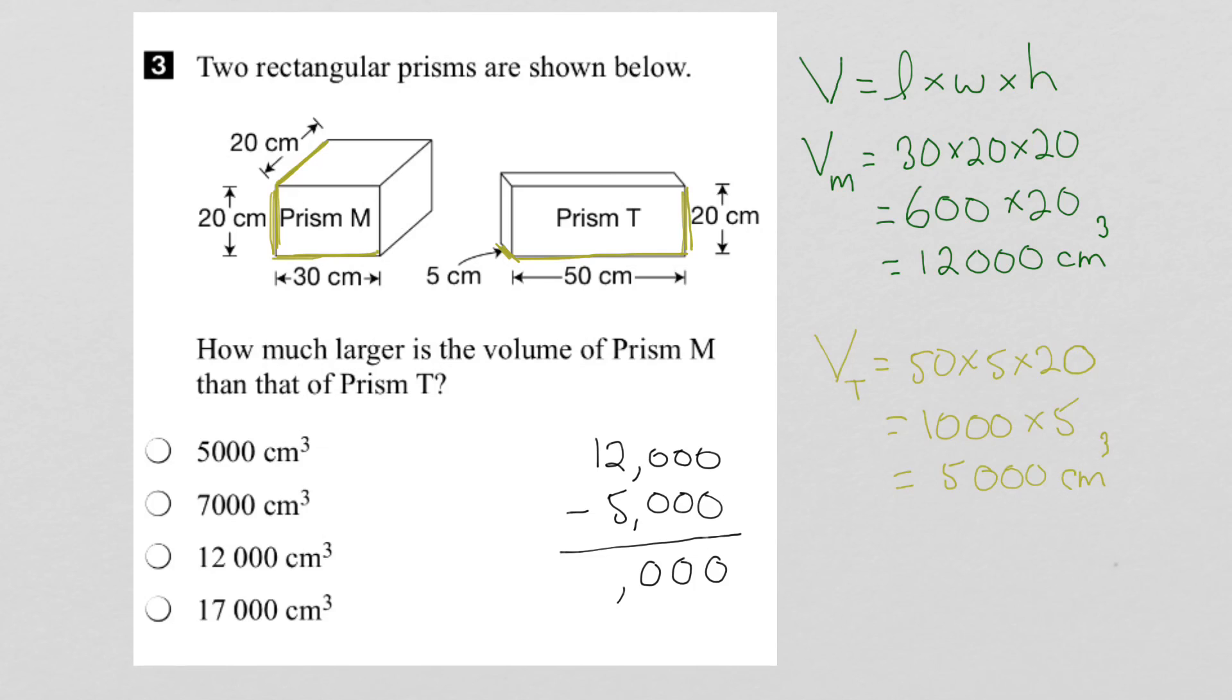So prism M is 7,000 cm³ larger than prism T. And therefore the second option here is the right answer.